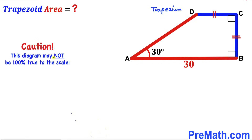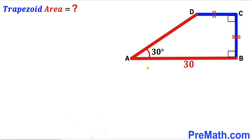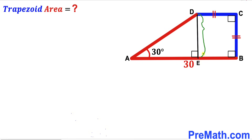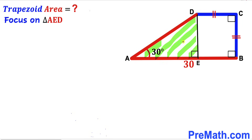Let's get started. For our first step, we focus on the 30-degree angle and the two 90-degree angles. We draw an auxiliary line by dropping a perpendicular DE on base AB. Now let's focus on right triangle AED.